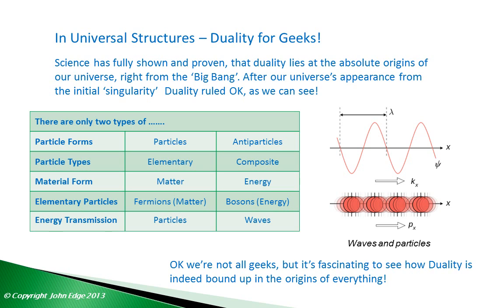We have a small section here for geeks, which you can pass through quickly if you like, but science has shown and proven that duality lies at the absolute origins of our universe, right from the Big Bang. With particles you've got particles and anti-particles. In particle types there are elementary and composite particles. In material form there's only energy or matter. Elementary particles are either fermions — the basis of matter — or bosons — the basis of energy. And in energy transmission you've only got particles and waves. Science is showing us how duality is bound up with the origins of everything.